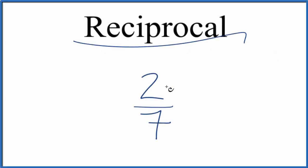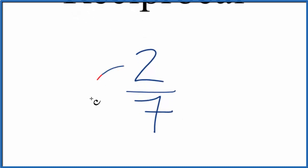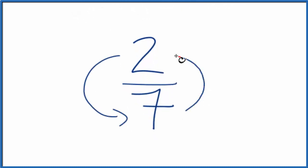Let's find the reciprocal for two-sevenths. Here's how you do it. When we're finding the reciprocal, we flip the numerator and the denominator. So we'll move the two down and the seven up top.